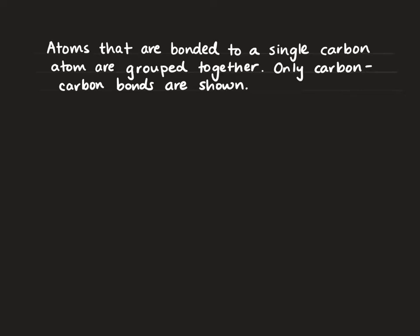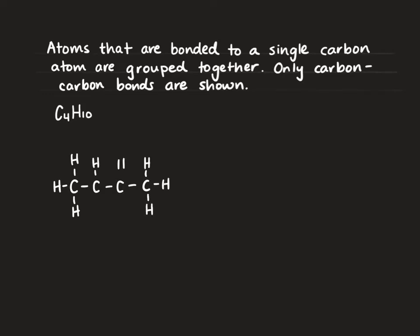We're going to look at the structure of butane to get started, so C4H10. I'm going to draw the structural diagram of butane first so that we have that to compare. Butane has a four carbon backbone. There are ten hydrogens — three hydrogens on each of our end carbons and two on each of our carbons in the middle of the chain, so that gives us ten.